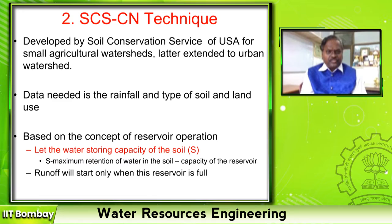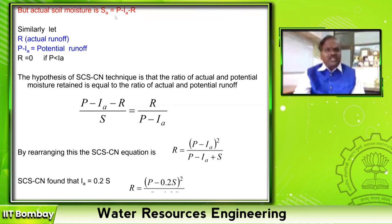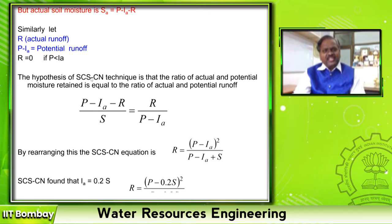The data needed for the SCS curve number technique is rainfall, type of soil, and land use. This method is derived based on the concept of reservoir operation — let the water-storing capacity of the soil be S, the maximum retention. Runoff will start only when this reservoir is at maximum. The actual soil moisture SA equals rainfall minus initial abstraction minus runoff. Actual storage is P minus IA minus R.